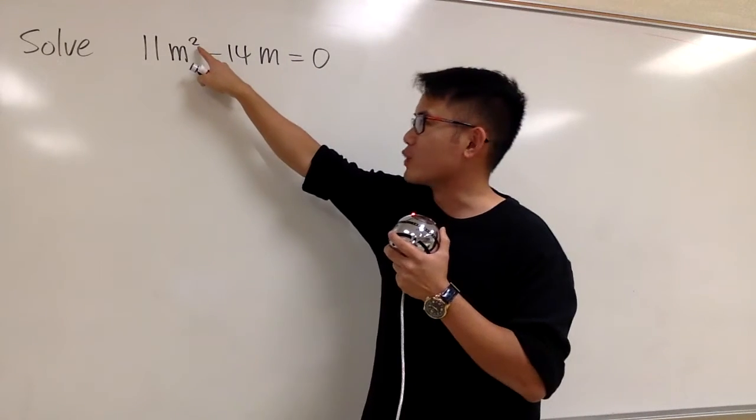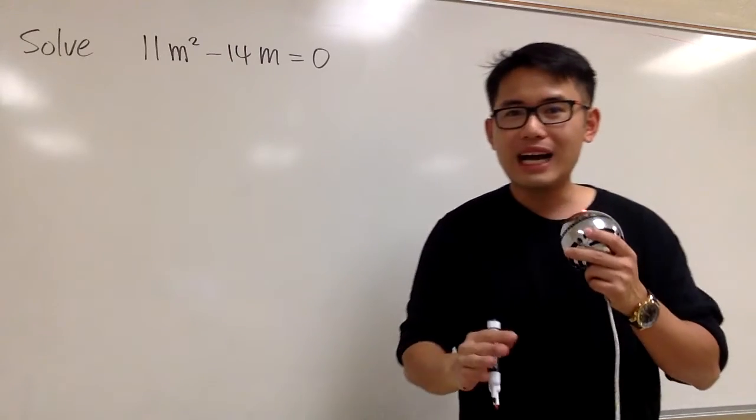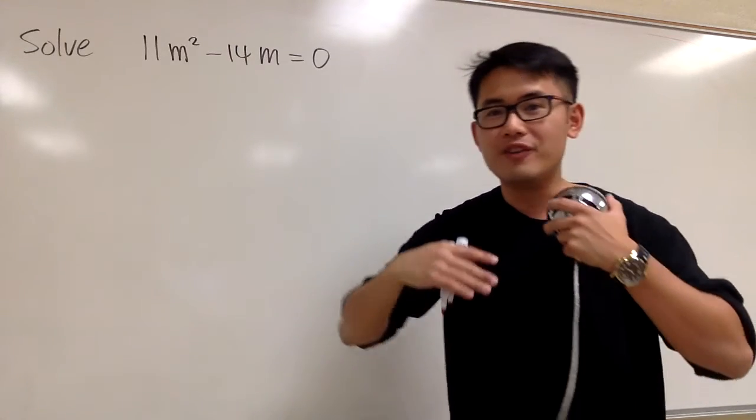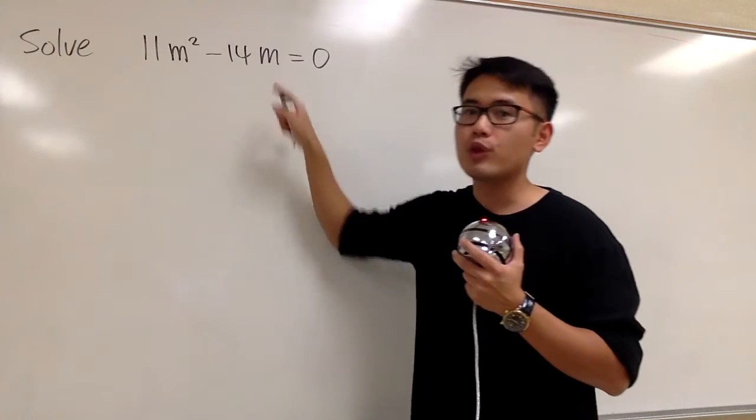As we can see, we have the square right here, m squared. Whenever we have m to the second power or even higher power, we should do this by factoring. Especially, you see the m twice.